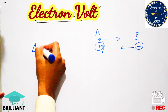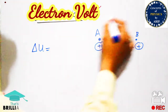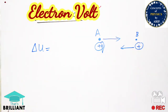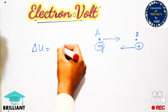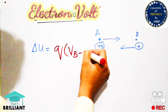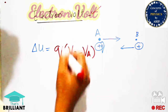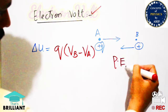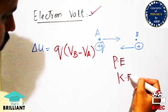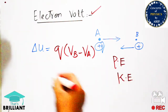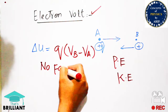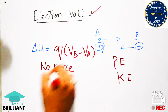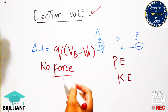This potential difference is in the form of change in potential, and these two charges have some potential energy, so it will be in the form of delta u. Delta u will be equal to q into delta v, where q is the charge on the test charge and vb minus va is the potential difference between point b and point a.